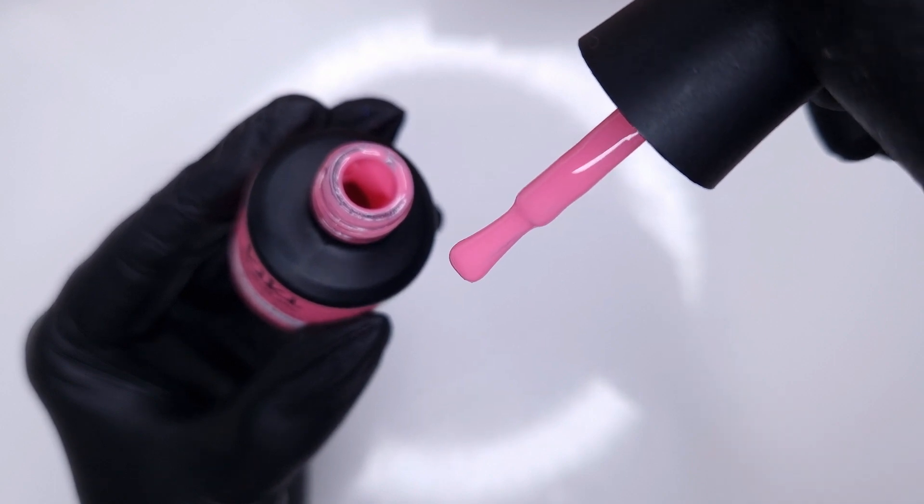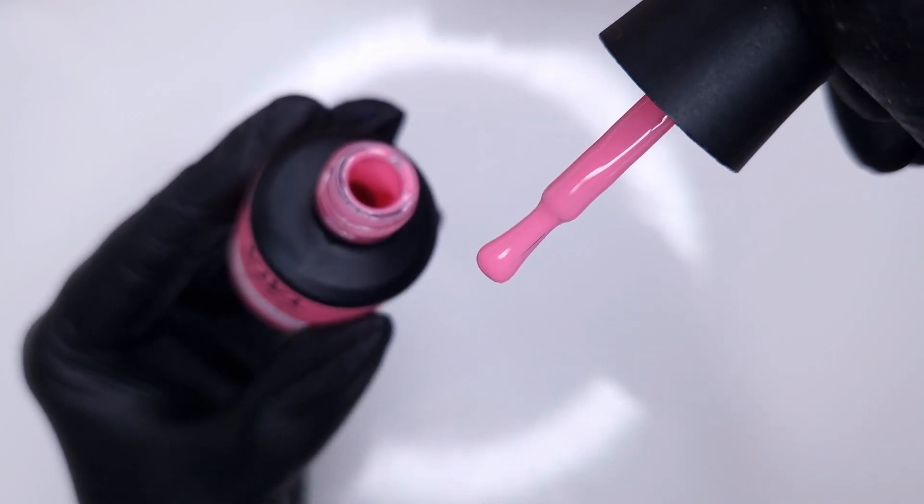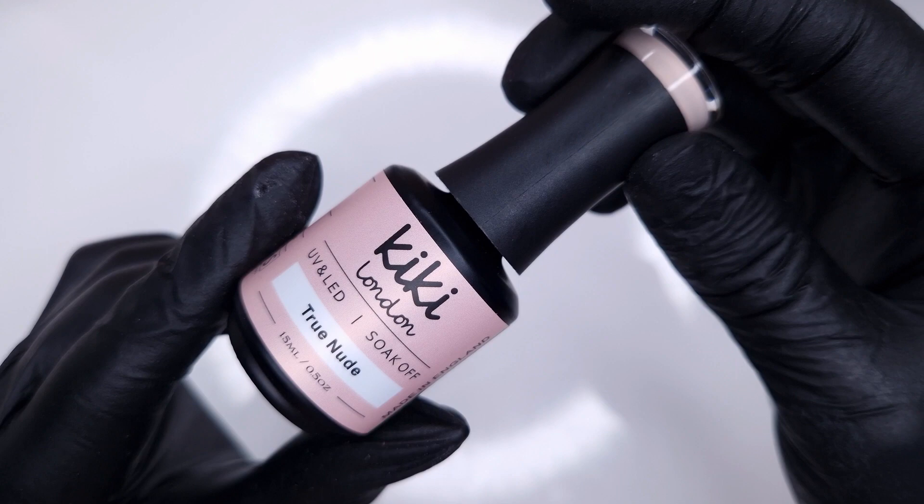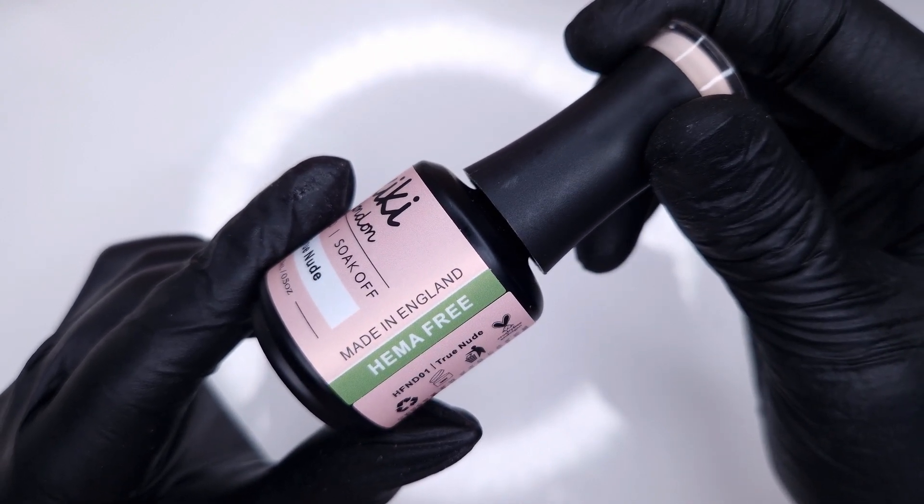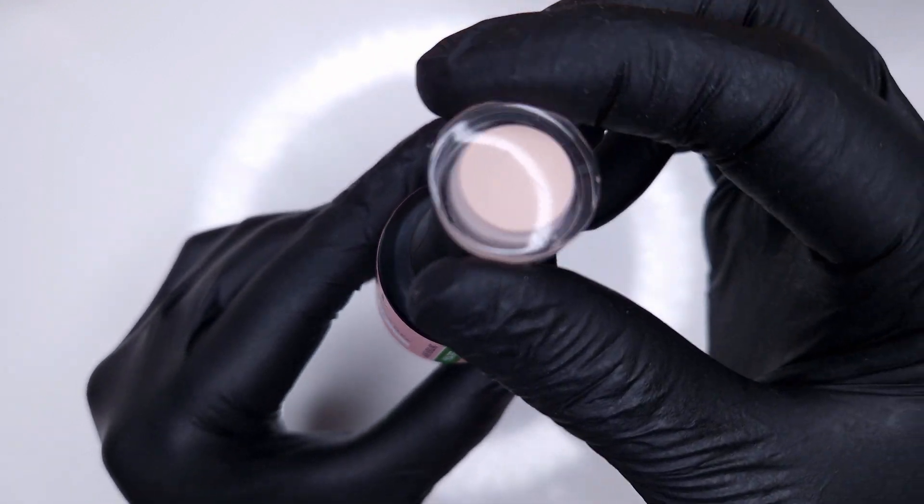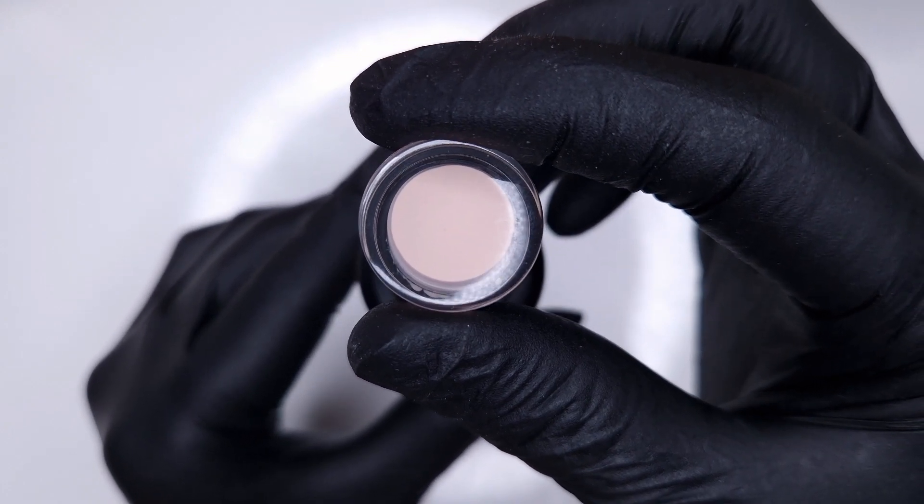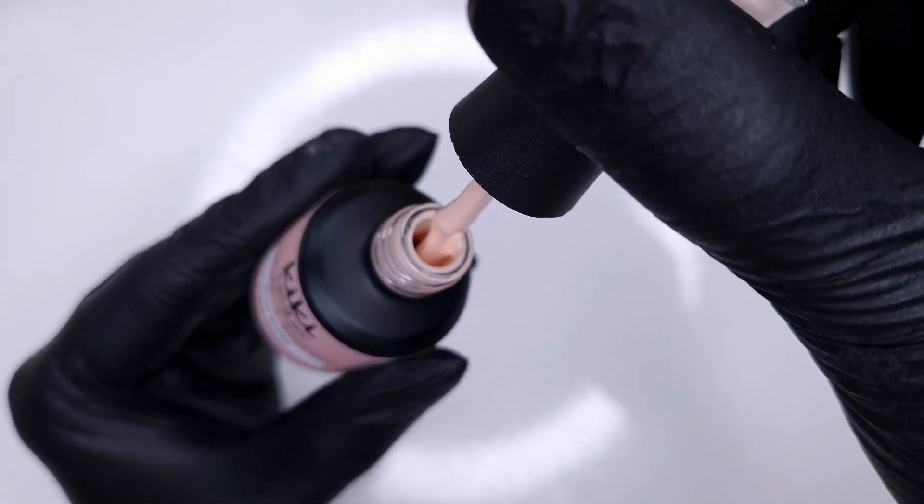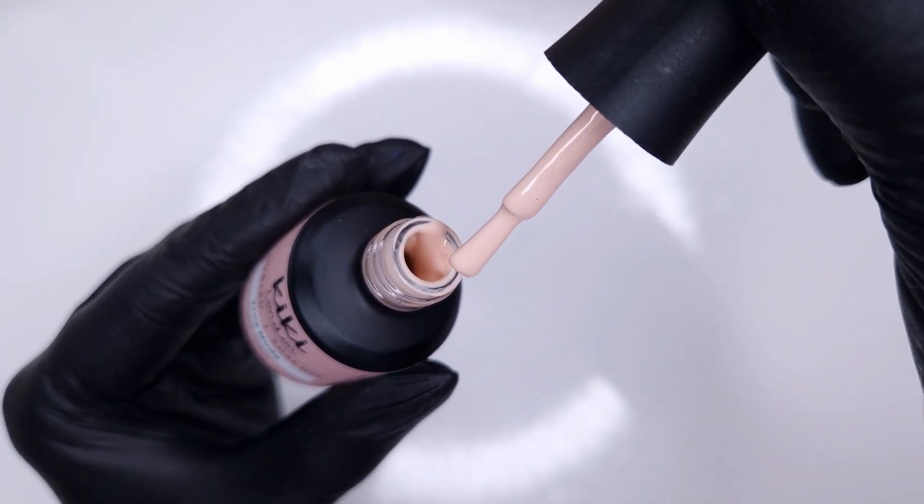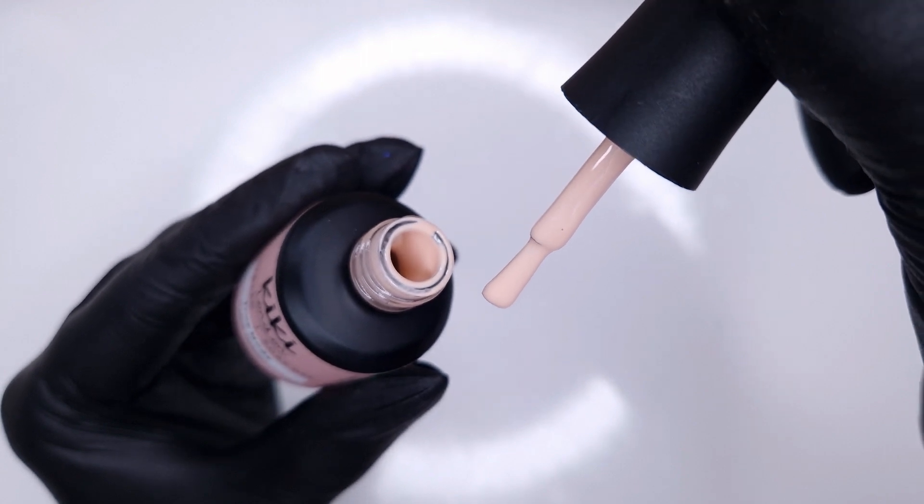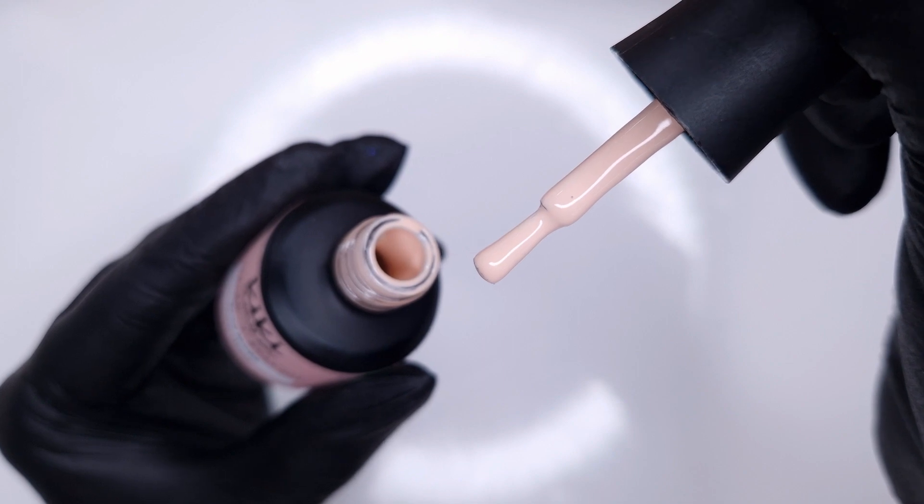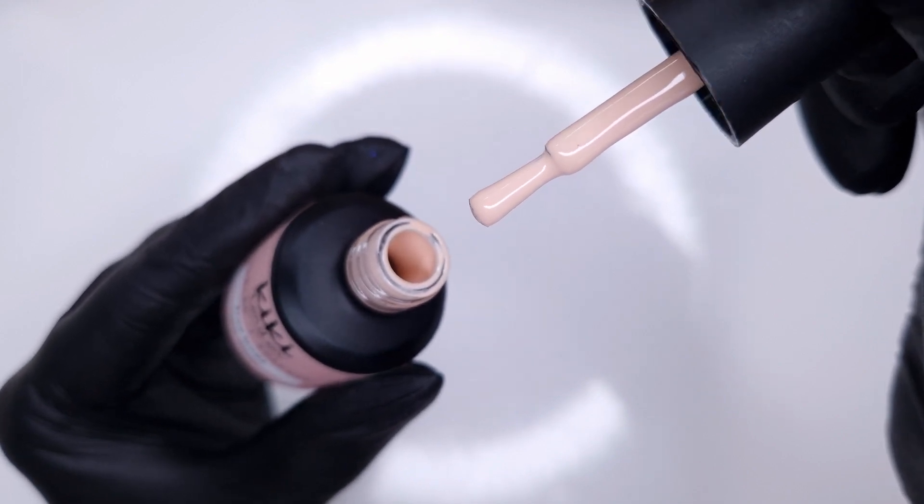So here we have Barbie Pink which is a very on trend shade. I feel as though Barbie thanks to the new movie coming out is super trendy at the moment. So this color is definitely a must-have in your collection. And then of course every collection needs a nude. So we have the beautiful True Nude which is a really opaque creamy nude shade. I have worn this one myself and I'm absolutely loving it.